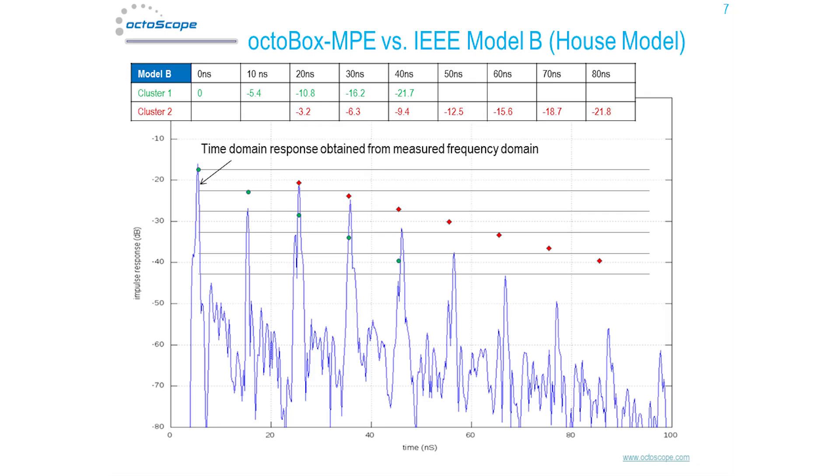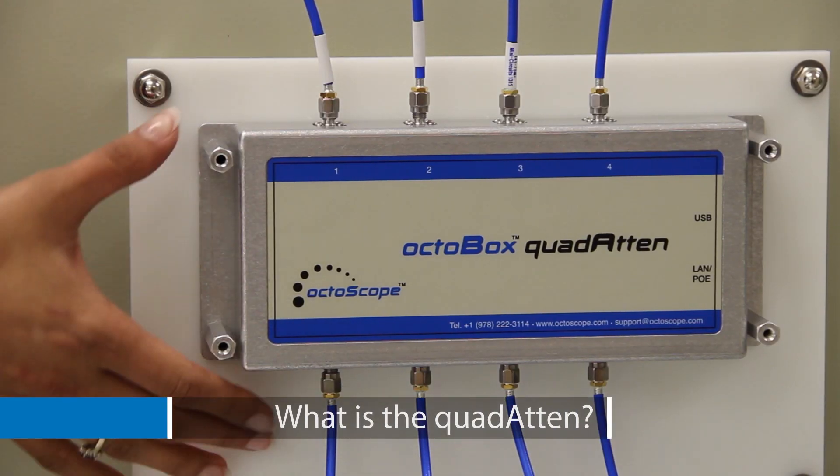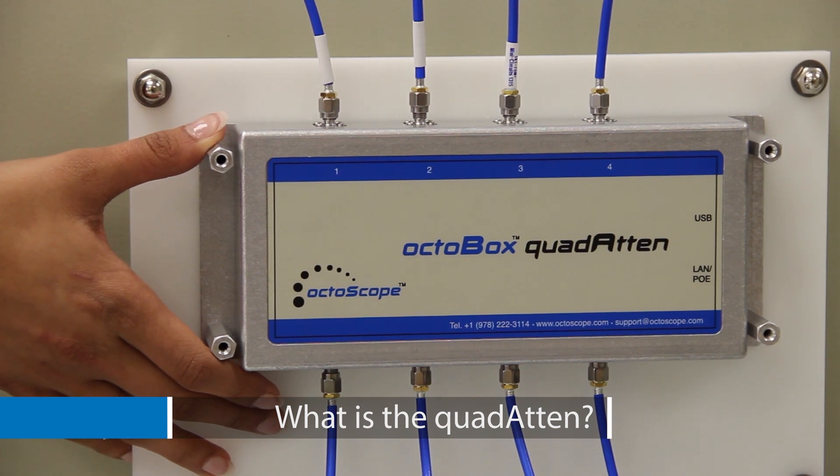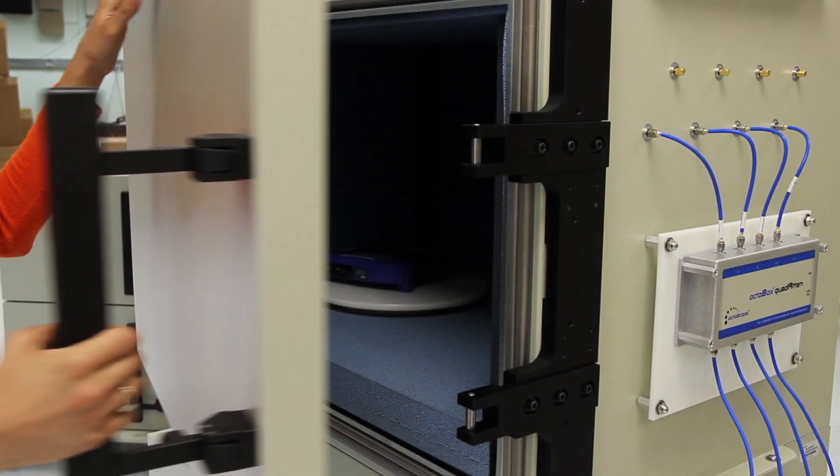The multipath emulator frequency response and power delay profile closely model the IEEE 802.11 standards for a typical house. The Octabox quad attenuated modules are digitally programmable, solid-state attenuators.